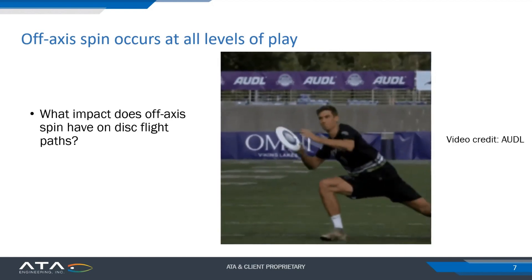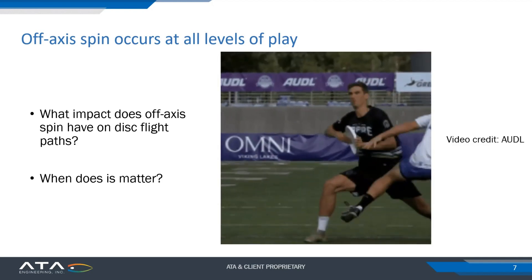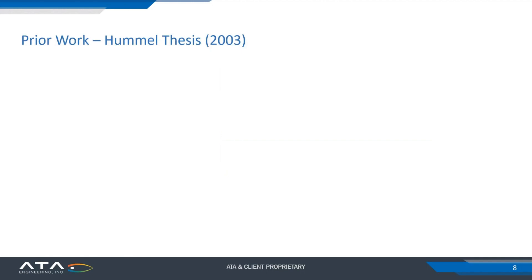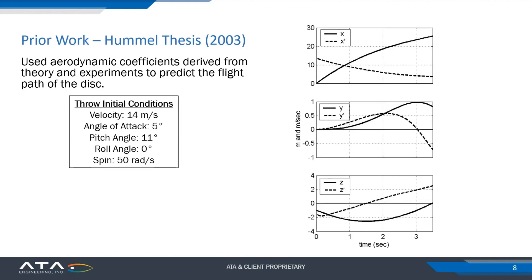Off-axis spin is not just a beginner issue — it occurs at all levels of play. Even very good players from top semi-professional ultimate teams in North America show a touch of wobble right after releasing the disc. I wanted to answer: what impact does this off-axis spin have on the flight path, and when does it matter? For prior literature, I reference a thesis by Hummel from 2003, which used an aerodynamic coefficient model derived from experiments and theory to predict disc flight paths, providing initial throw conditions and benchmark results.